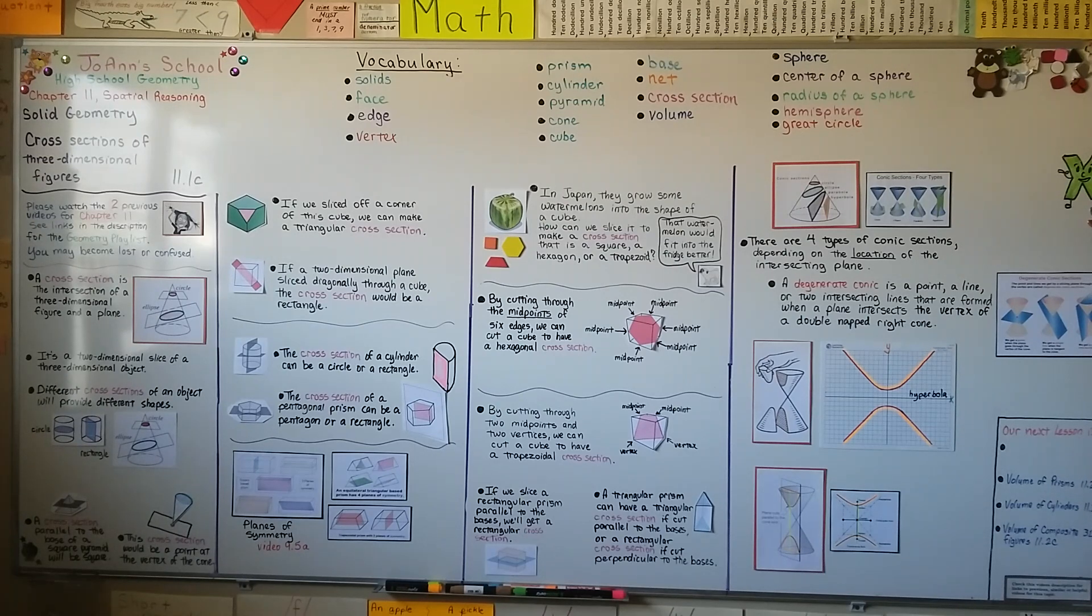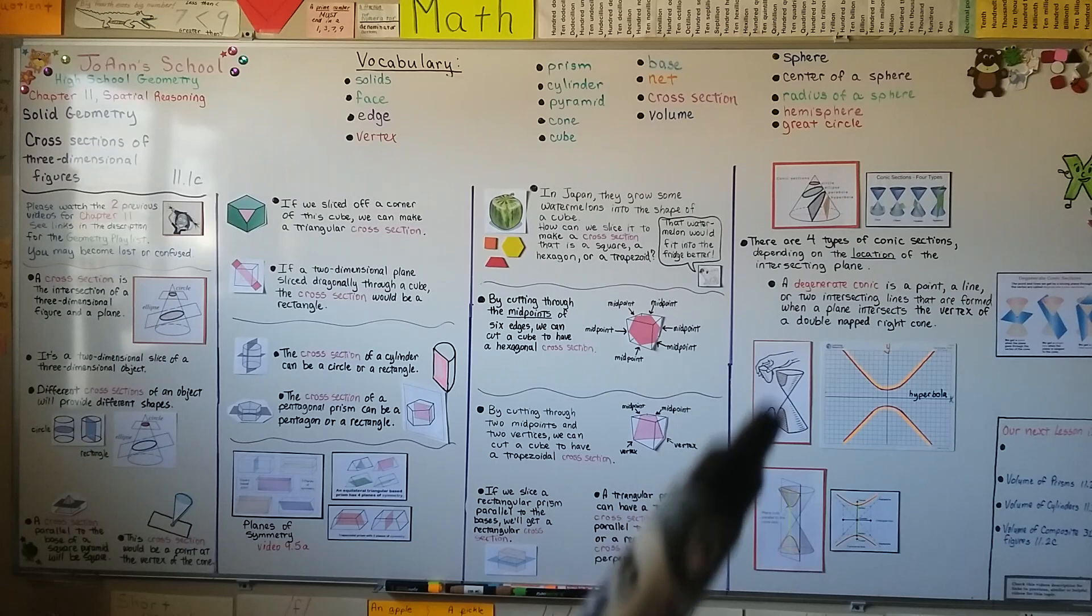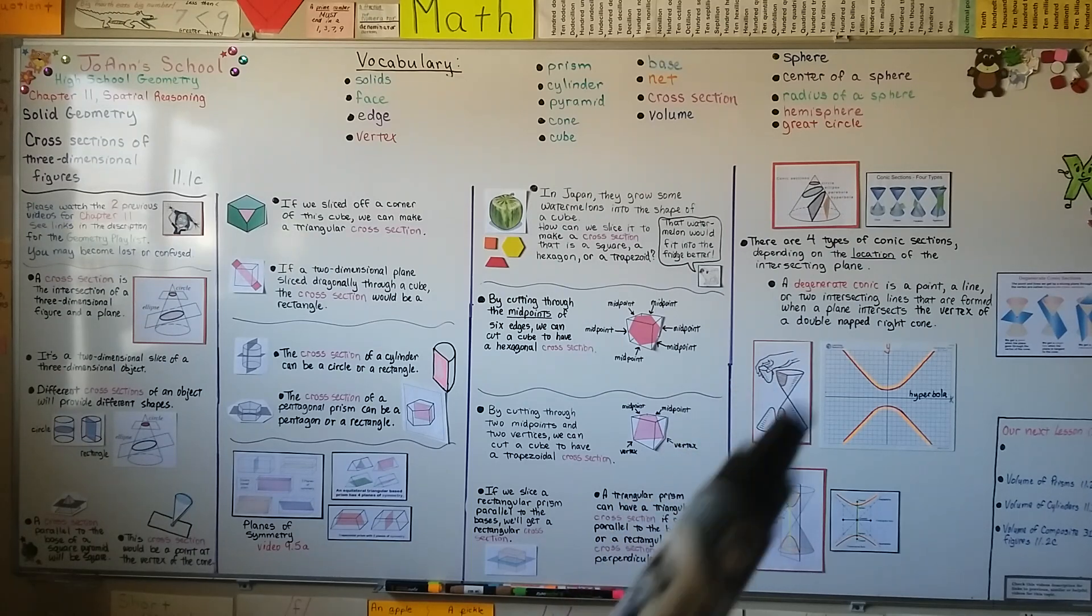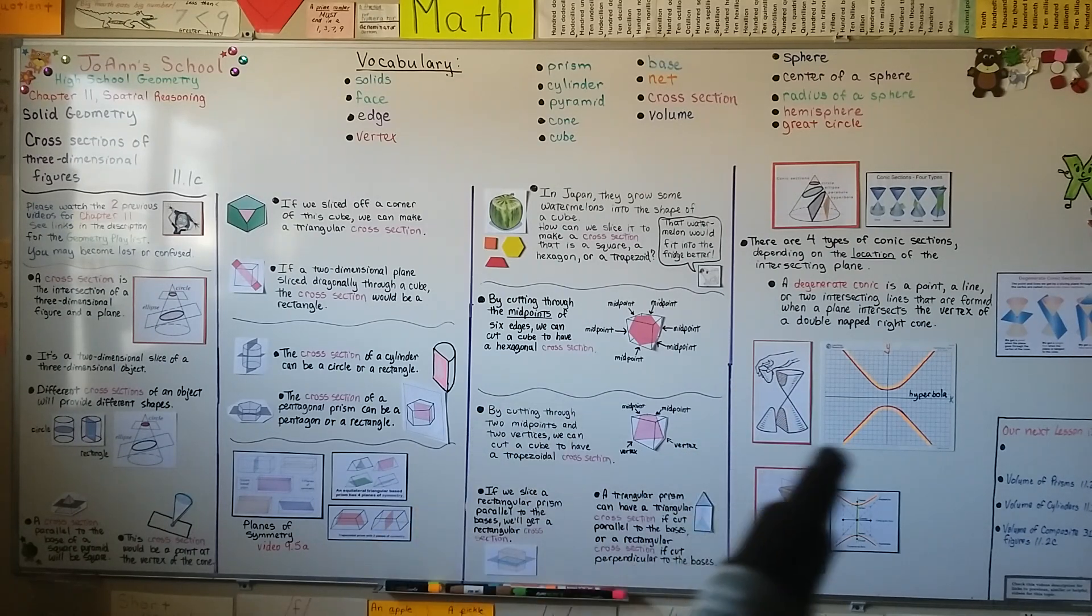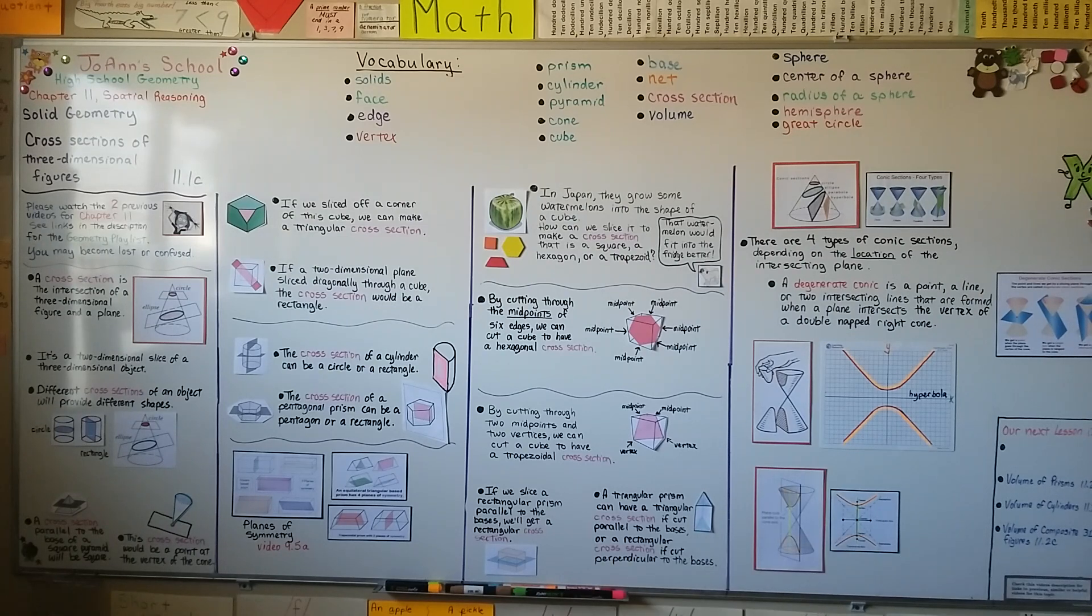So that's cross sections of 3D figures, and now you know what happens when we slice this double-napped right cone like this, and you can see the hyperbola that it makes. I hope this was helpful. Remember, there's links in the description if you need them. Have a great day, and I'll see you for the next lesson. Bye!